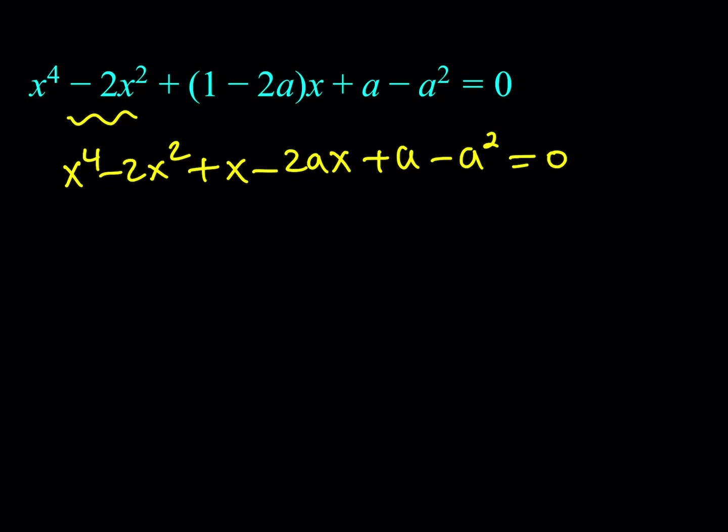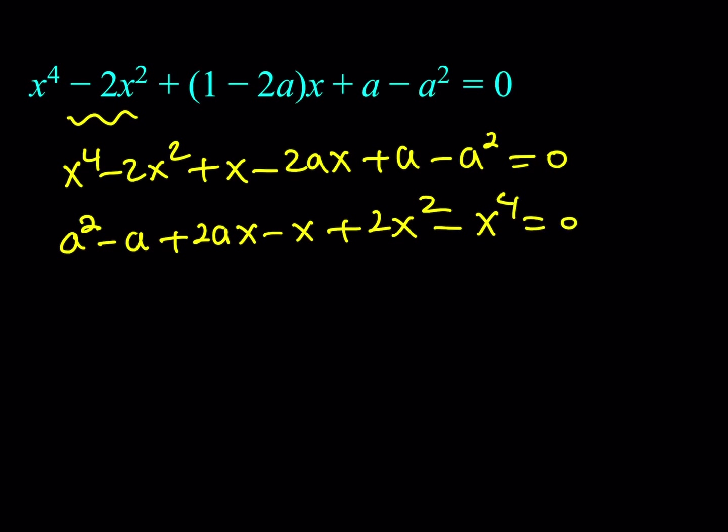Now, there's a quartic formula, but that would complicate things. Instead, my plan is to rearrange this equation as a quadratic in a rather than x. I'll move everything to the right-hand side so that a squared is positive: a squared minus a plus 2ax minus x plus 2x squared minus x to the fourth equals 0. Essentially, I negate everything.